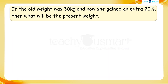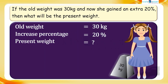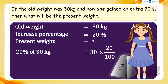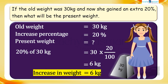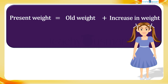Our next condition is: if the old weight was 30kg and now she has increased by 20%, then what will be the present weight? For that, we have to find the 20% of 30kg. That is, 20% of 30kg equals 30 multiplied by 20 divided by 100, equals 6kg. That is the increase in weight. Now we have to know the present weight. Present weight equals old weight plus increase in weight, equals 30kg plus 6kg, equals 36kg.